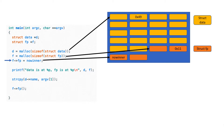So this is how the heap looks: we have two heap chunks — one heap chunk for struct data, one heap chunk for struct fp. And in fp there is the no_winner address. The strcpy at the end does nothing other than putting our input — the input we control — after the 0x49.